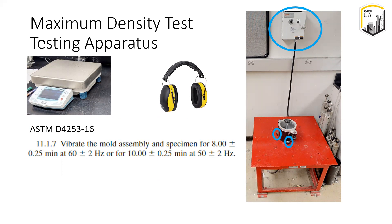After eight minutes, use a vernier caliper to measure the drop in the height of the soil. Because the soil does not fill up the entire mold after the test, you must calculate the volume of the soil based on the height of the soil and diameter of the mold.